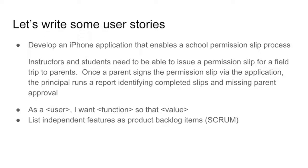One of the most common formats for user stories is: as a user, I want a specific function so that it provides whatever the certain value is going to be. In this example, one user story could be: as the principal, I want to run a report that identifies all the completed permission slips so I will know what students go on the specific field trip. You can also write a user story that says: as a principal, I want to run a report that identifies the incompleted permission slips so I can identify which students are missing parent approval.